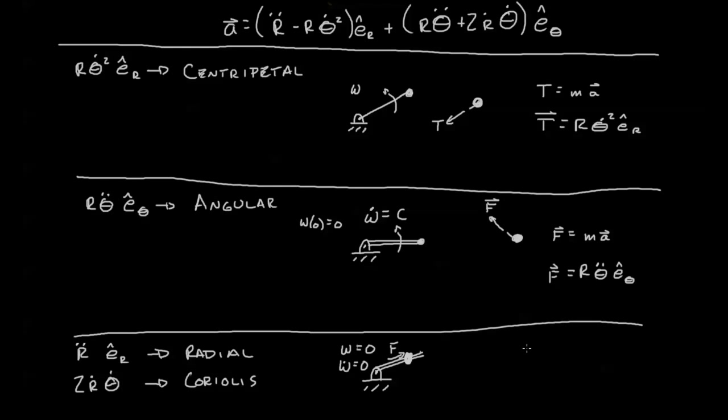In this case, we draw our free body diagram. We have some applied force. The applied force equals the mass times acceleration. We look up here and we see that the only term that's valid here is r double dot. That said, we see mass times r double dot in the e_r direction.